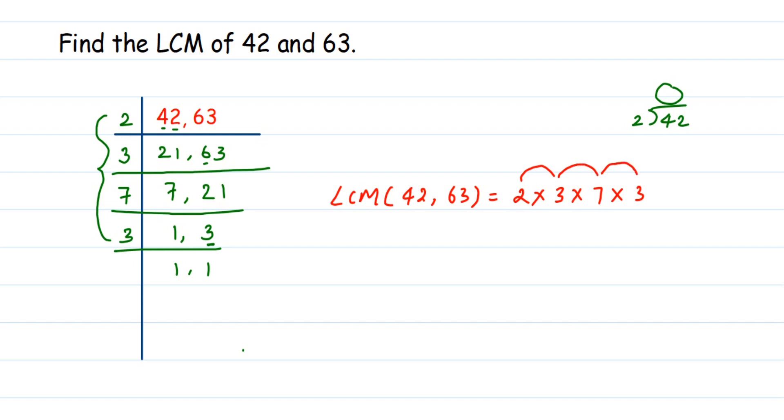Now 42 times 3, let's multiply 42 times 3. 6 and 12, so we get 126. So LCM of 42 and 63 is 126.